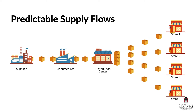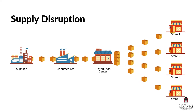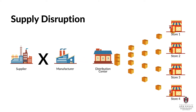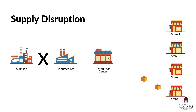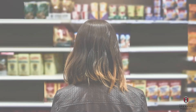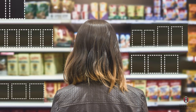But what happens when there's some type of supply disruption? Or when a supplier cannot deliver to a manufacturer? Perhaps the supplier has ongoing quality problems, employee turnover, or erratic lead times that lead to sporadic deliveries. Regardless of the root cause of the supply chain disruption, everything stops flowing and retail shelves become empty of products that consumers want or need.